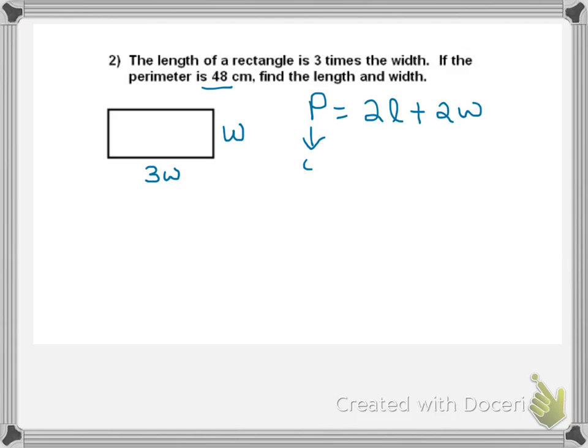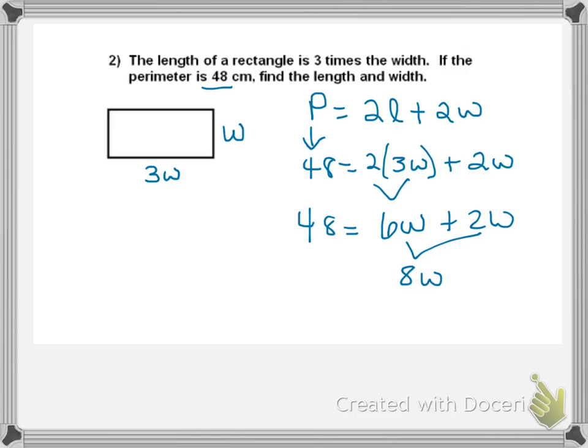2 times L, which is 3W, plus 2 times W. Here, I have to multiply first. So, that's 6W plus 2W. Collect-like terms, which would be 2W plus 6W, which is 8W. And then I get 48 divided by both sides, because that would be the step of solving this one-step equation now. W equals 6. So, my width is 6 inches.